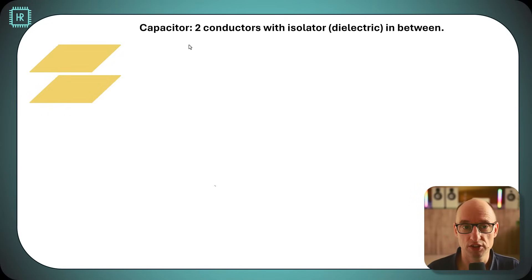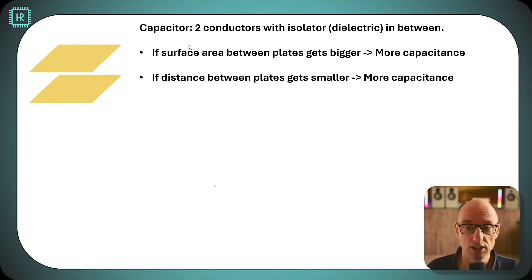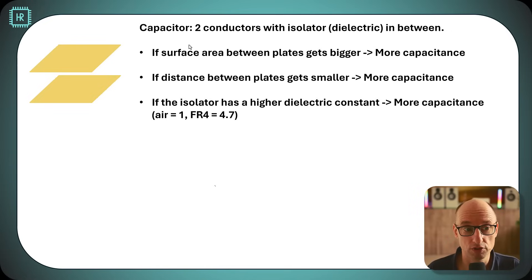Another thing we need to be able to estimate is the value of capacitance. A capacitor is basically two conducting plates with an isolator in between, usually called a dielectric. If the surface area between the plates gets bigger, you get more capacitance. If the distance between those plates gets smaller, you get more capacitance. Another impact is the dielectric constant of the isolator between those plates. The higher the dielectric constant, the more capacitance you get. Air has a dielectric constant of 1, and FR4, which is a standard PCB material, has a dielectric constant of 4.7, which would yield a 4.7 times larger capacitor.